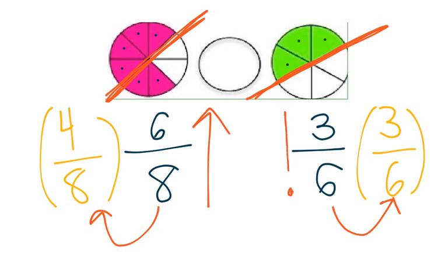So, let's think again. Which fraction is going to be bigger — the one that is larger than 1 half, or the one that is equal to 1 half? Think for a minute and take a look at your pictures. Here, we know that 6 eighths is going to be the greater fraction. So, you would say 6 eighths is greater than and not equal to 3 sixths.